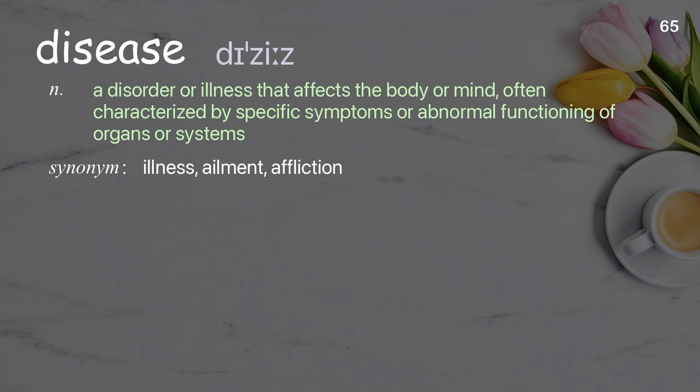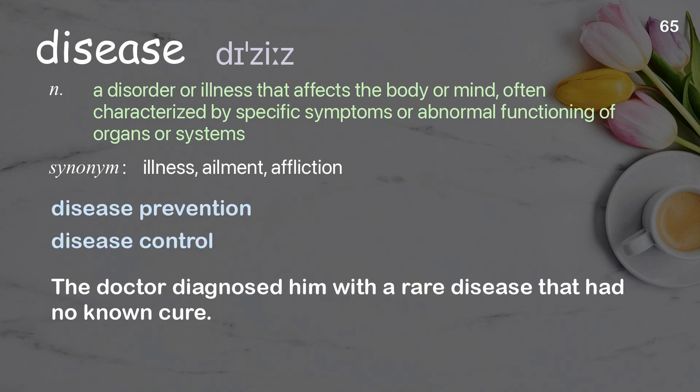Disease: A disorder or illness that affects the body or mind, often characterized by specific symptoms or abnormal functioning of organs or systems. Examples: Disease prevention, disease control. The doctor diagnosed him with a rare disease that had no known cure.